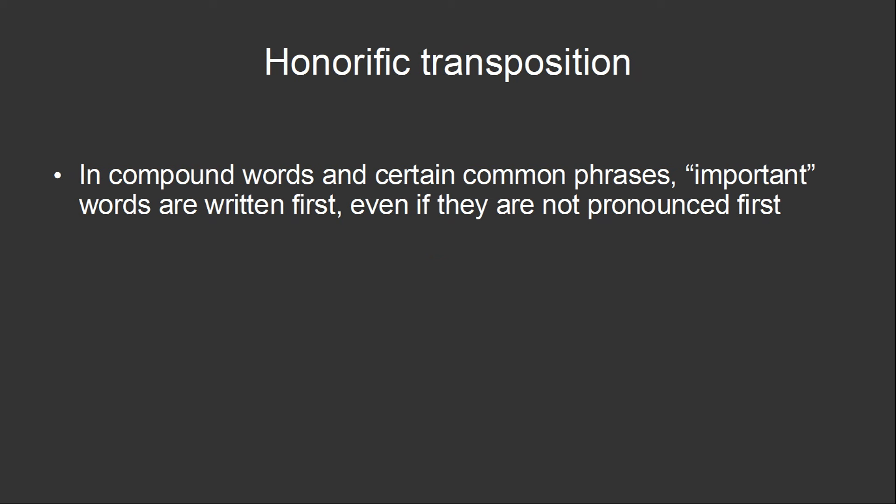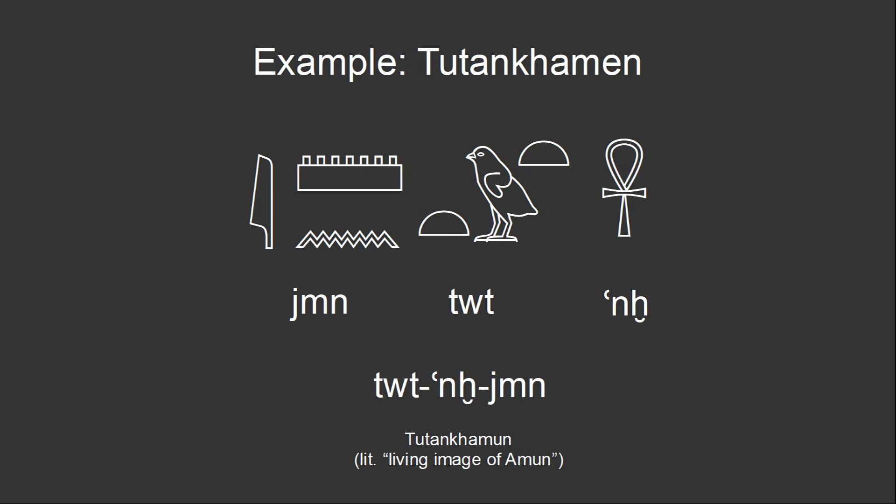Lastly, there's honorific transposition. This is a special rule that when writing compound words or certain set phrases, important words, such as those relating to gods, are written first, even if they're not pronounced first. The name of the pharaoh Tutankhamun, which literally means living image of Amun, is written as Imen Tutankh, even though it's still pronounced as Tutankh Imen, because Imen is the name of a god. It's written first as a sign of respect.